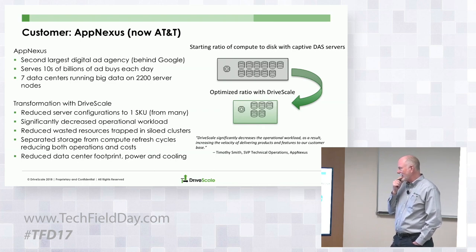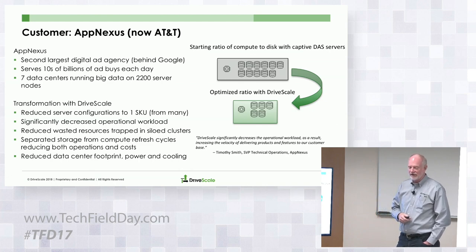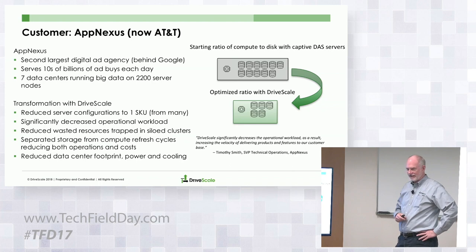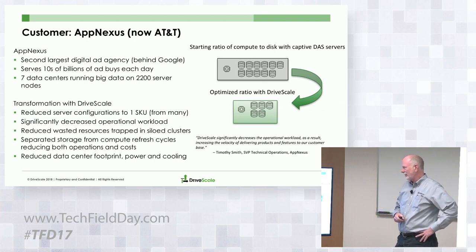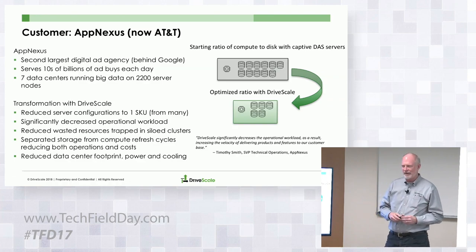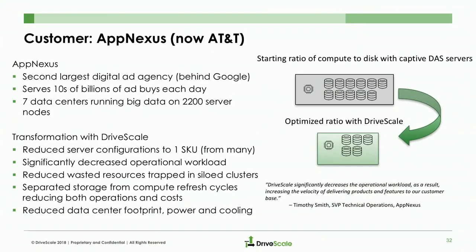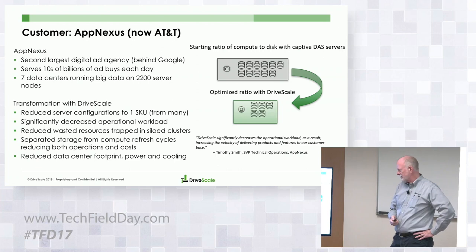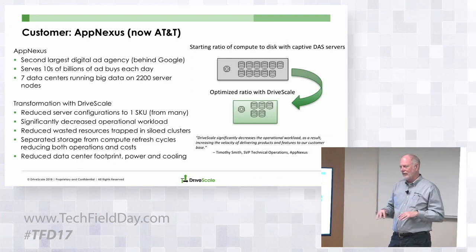AppNexus was the largest independent ad tech company outside of DoubleClick at Google until they were bought by AT&T and are now part of AT&T's advertising division, just named Xandr for Alexander Graham Bell. They're the guys who used to buy 12 and 18-drive nodes for everything and are now deploying 4, 5, 6, and 7-drive nodes. They basically reduced their server configurations to one SKU and one JBOD SKU to build everything, where they used to have many SKUs across the data center. We now have over 1,000 nodes orchestrated and put together with our software at AppNexus, and everything is running really well.